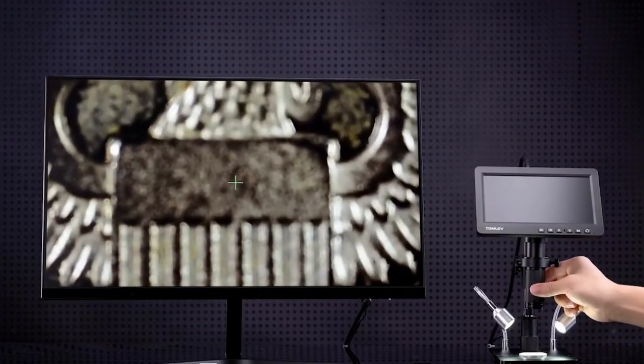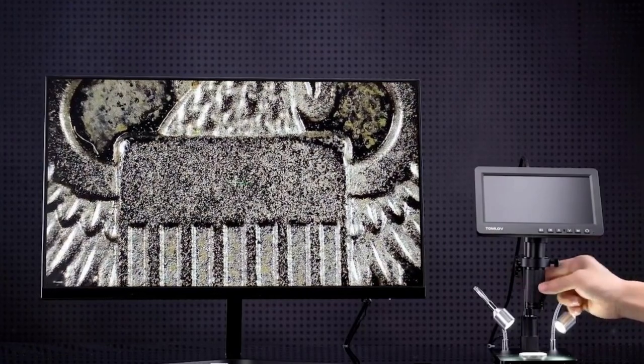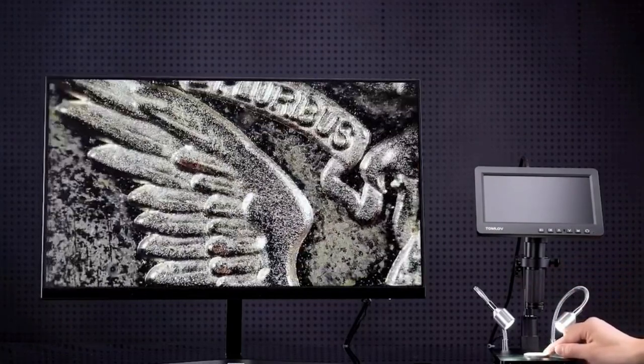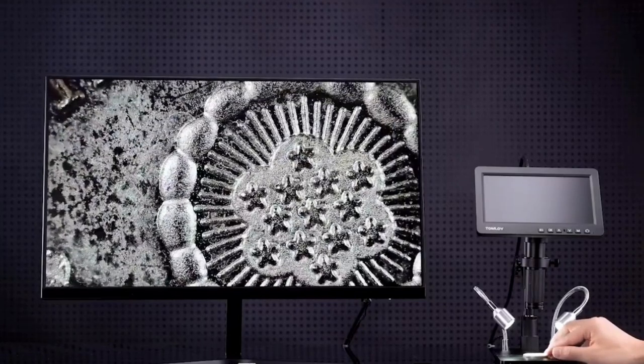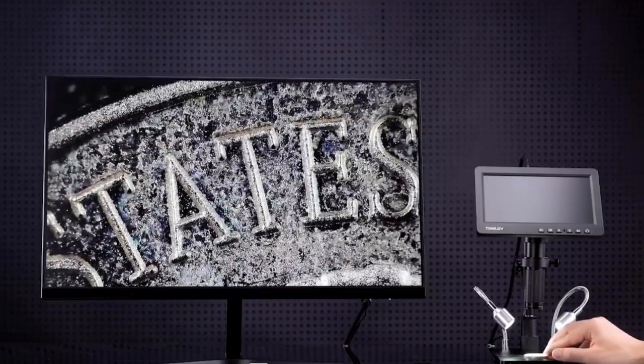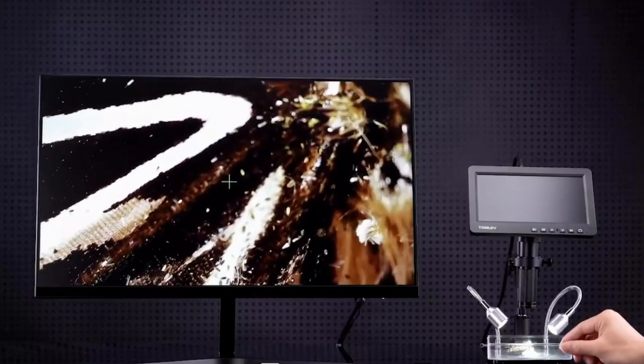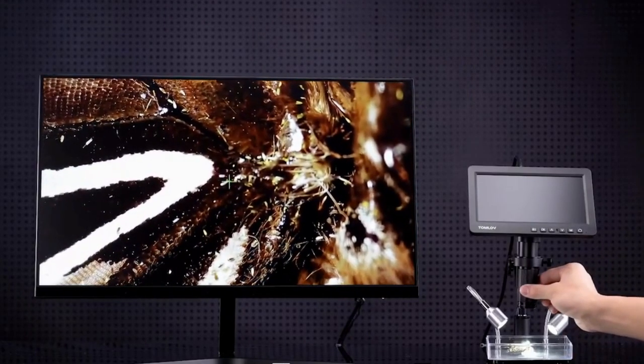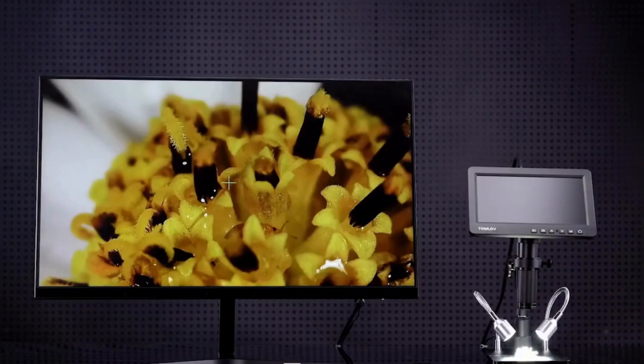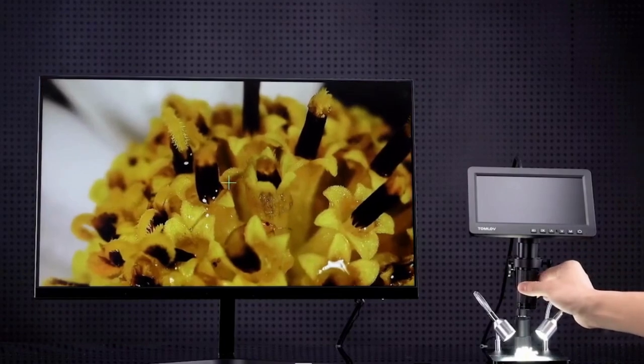Operating the DM209 is a breeze. A simple rotation of the metal knob allows you to zoom in and focus effortlessly. Capture the invisible with stunning 1080p/30fps videos and 26MP photos. All your precious data can be stored on the included 32GB SD card for further analysis and sharing.